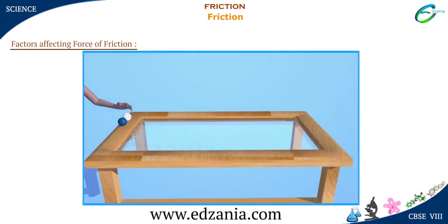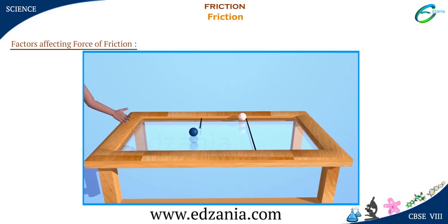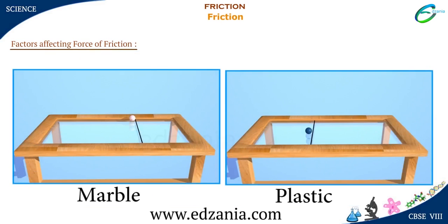Look at the plastic ball and a marble. Let's first roll the marble and mark the line where it stops. Now roll the plastic ball and mark the line. What do you observe? The marble covers more distance than the plastic ball. We can conclude that different objects moving on the same material surface cover different distances.